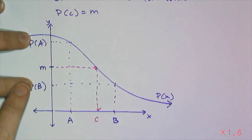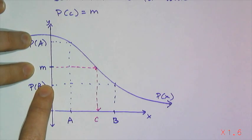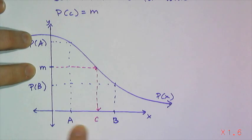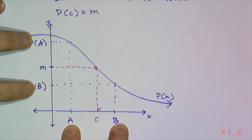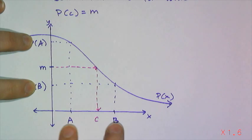If I have some number m that's in between my two y values, my function values, then I know there has to be at least one number c that's between the a and the b. So if I have a value in between my y values, there's a corresponding x value in between those x values.